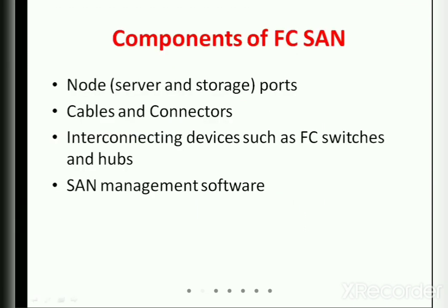When talking about Fiber Channel Storage Area Network components, there are mainly four: First, node ports — on both the server and storage sides. Second, cables and connectors — the cable is the wire and the connector is the interface point used to connect with the cable. Third, interconnecting devices such as switches and hubs, to connect servers and storage arrays. Fourth, SAN management software — a combination of hardware and software to manage, upgrade, and maintain the devices.